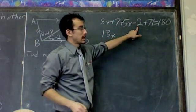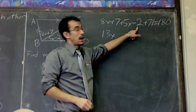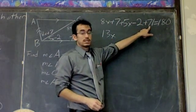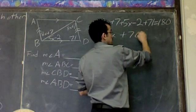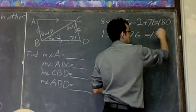I've got positive 7 and negative 2. Well, 7 minus 2 is 5. 5 plus 71, that's 76. So 13x plus 76 equals 180.